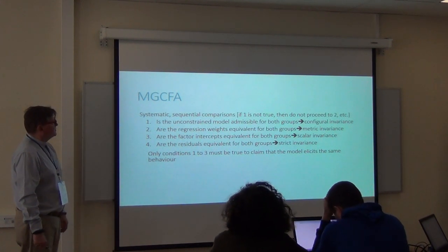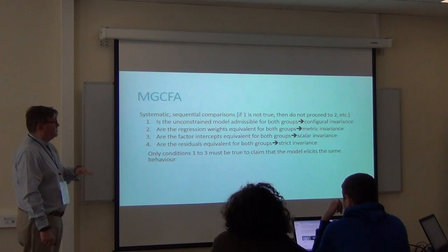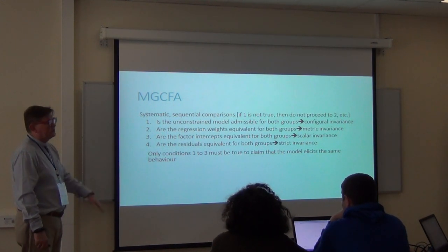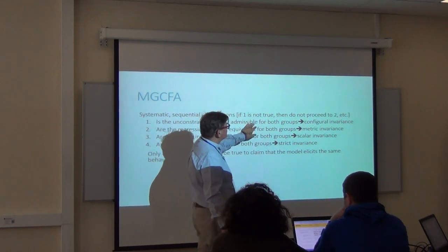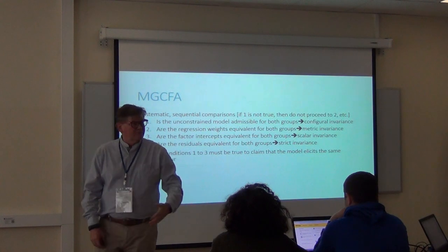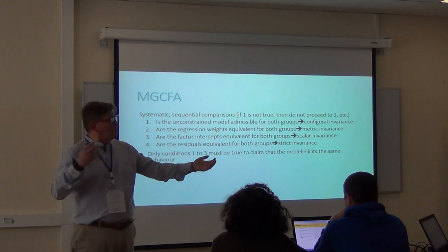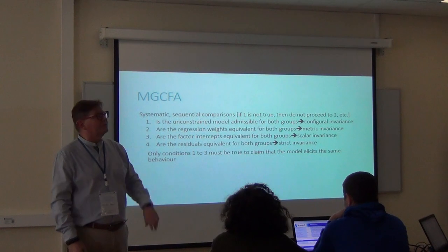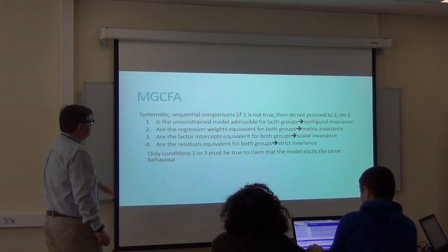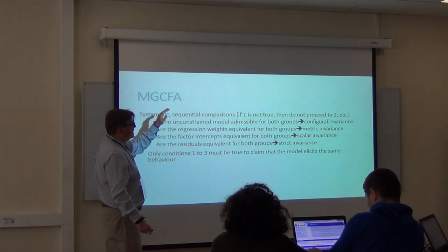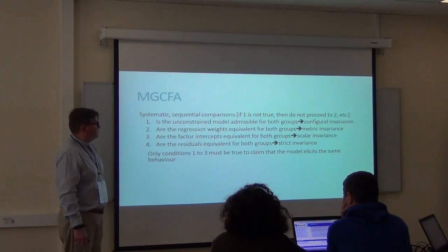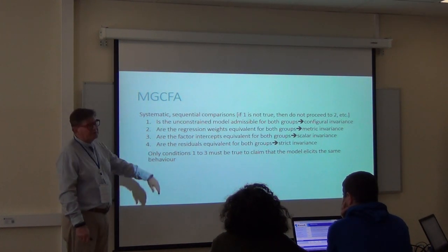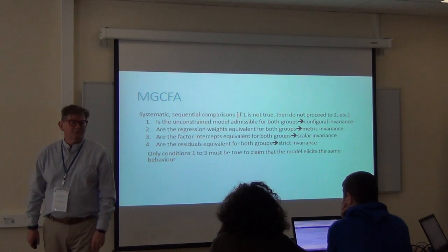So, systematic and sequential comparisons: if step one is not true, do not go to step two; if two is not true, do not go to three. Is the unconstrained model admissible for both groups? That's configural invariance. Are the regression weights the same? Metric invariance. Are the factor intercepts the same? Scalar invariance. Are the residuals equivalent? Strict invariance — but nobody cares about that.